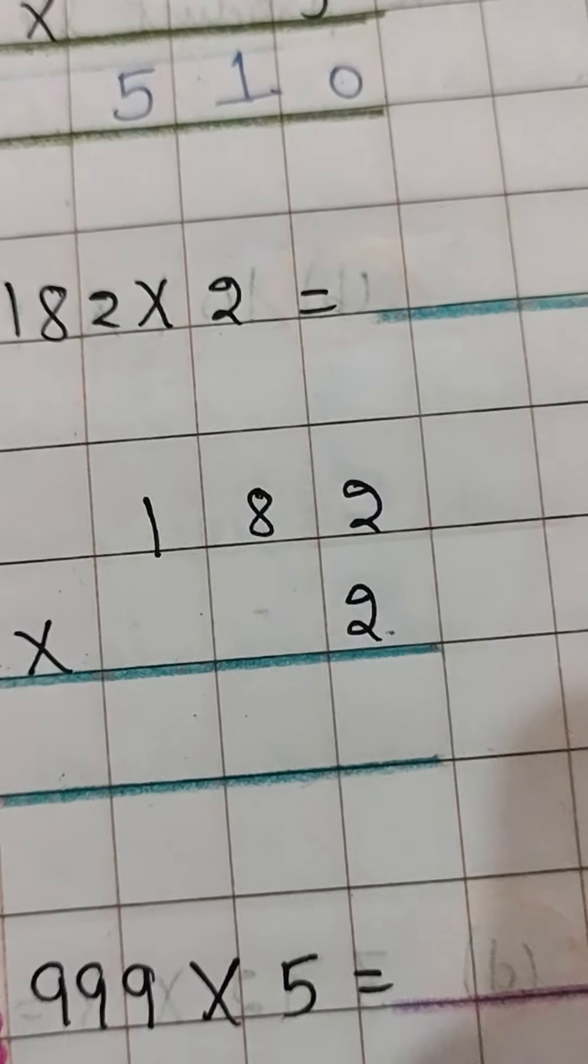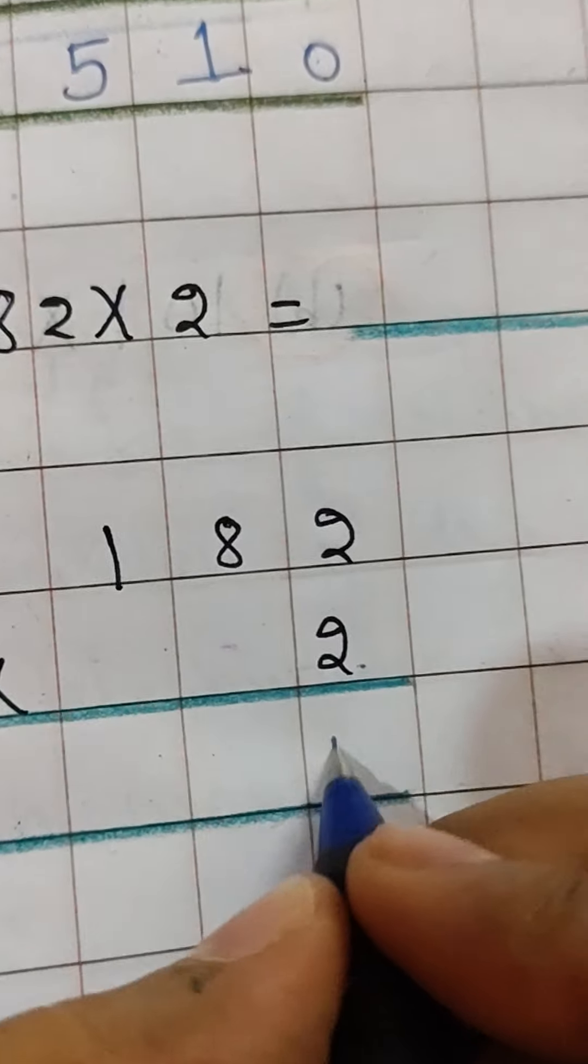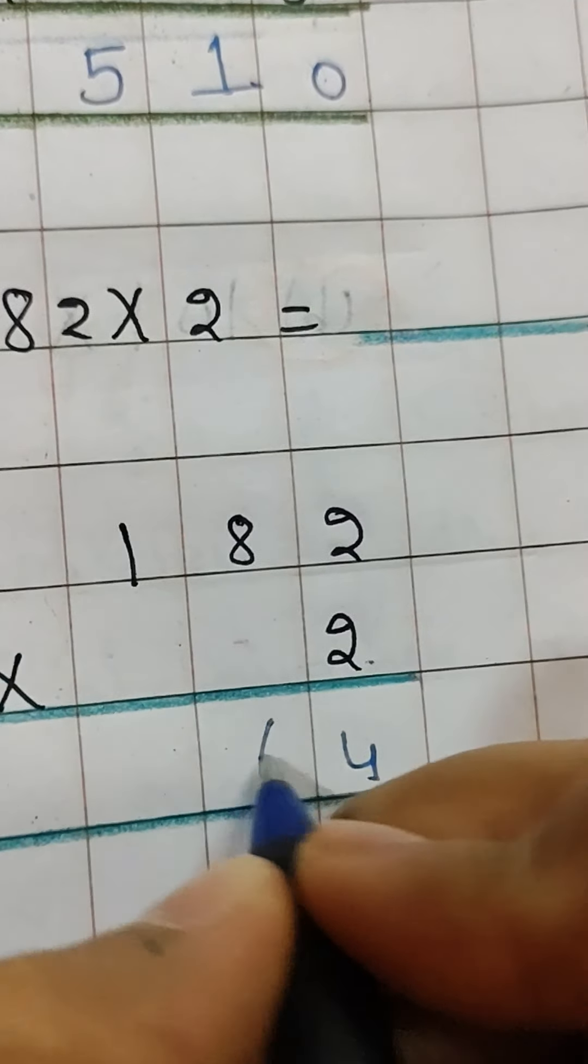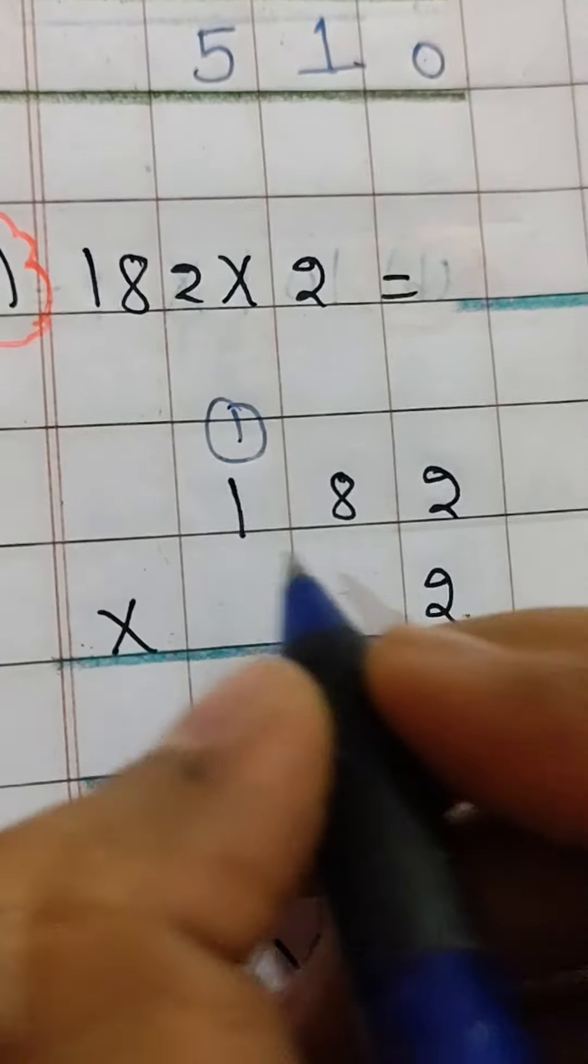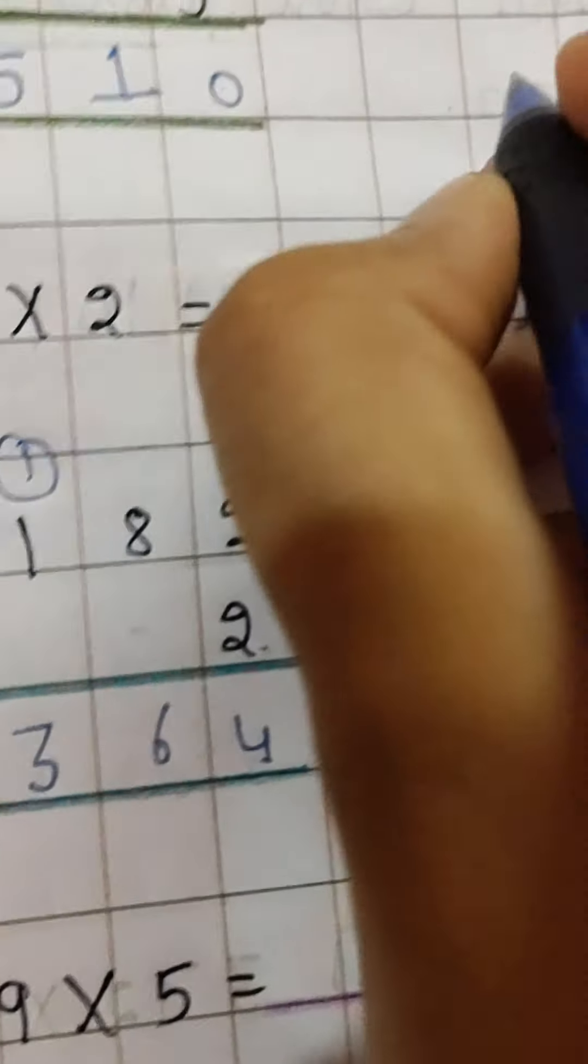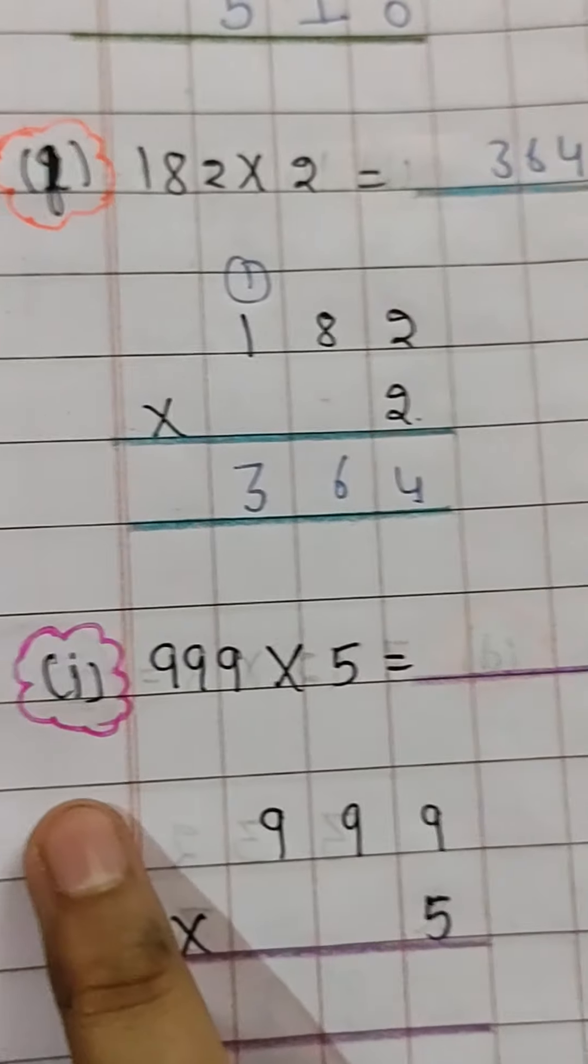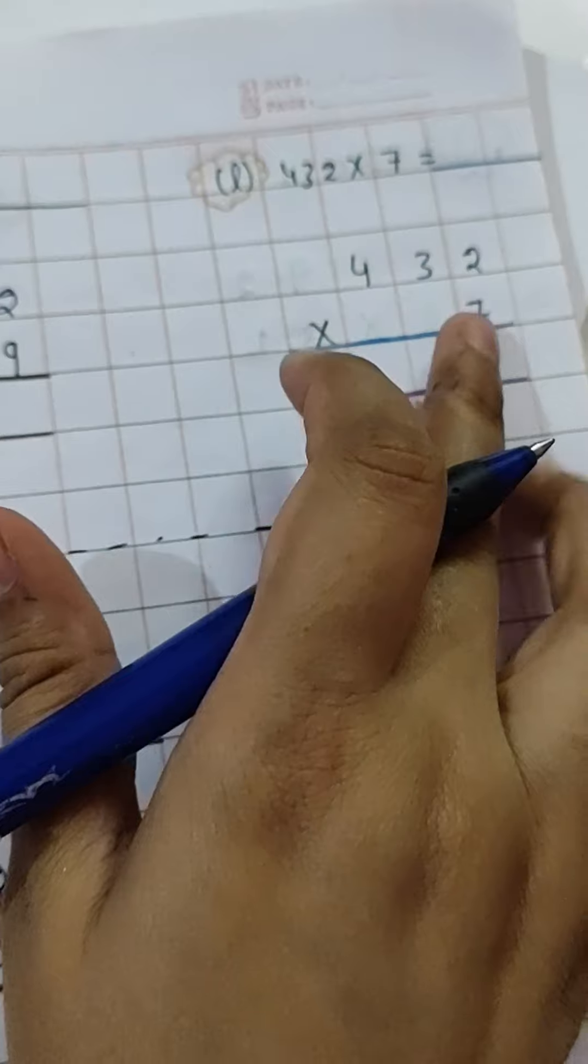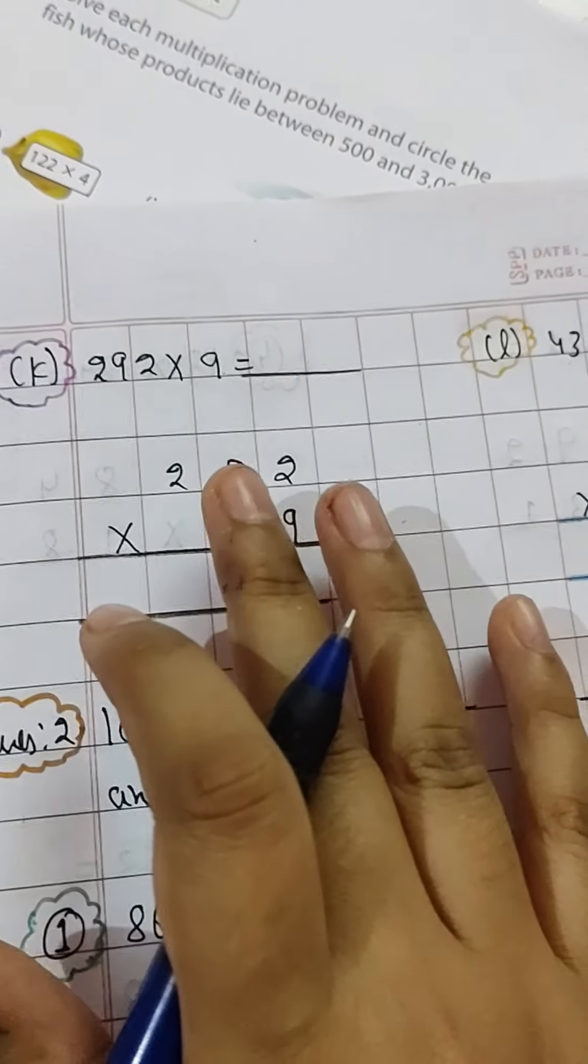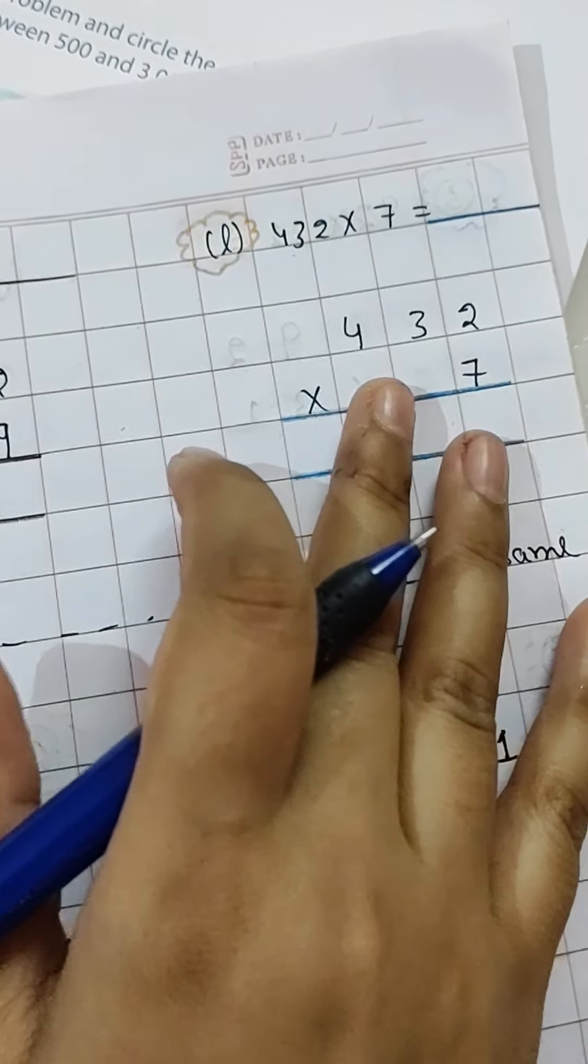Like this, those who are coming in between 500 to 3000 you have to circle. 182 times 4: 2 times 8 is 16, 1 here, 2 times 1 is 2 plus 3, so 364. This you will not circle. Every other part, H, I, J, K, and L will remain homework.